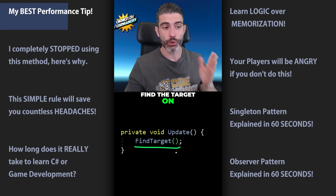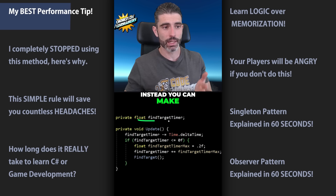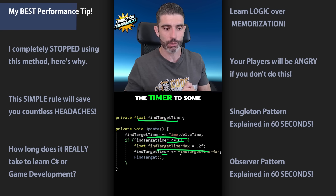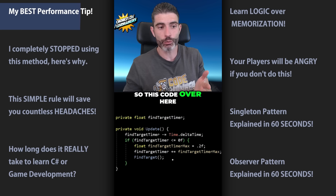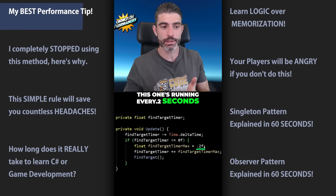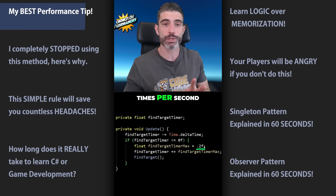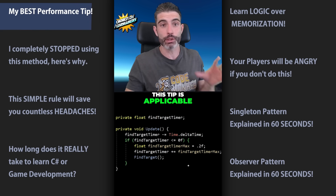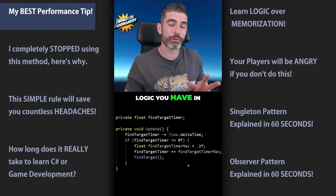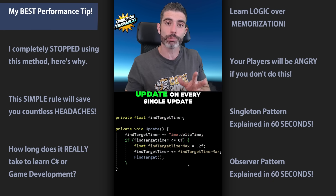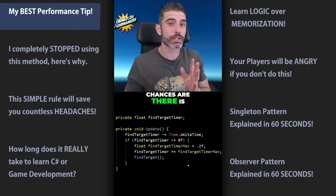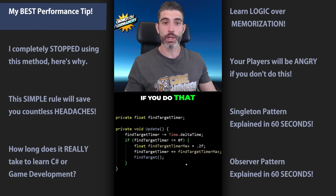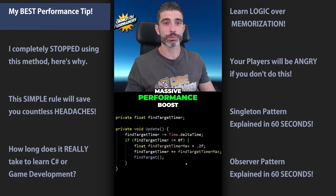One super easy way to boost performance: you don't have to find the target on every single update. You don't need the enemy to find targets 60 times every second. If you do it just two to five times per second, that's more than fast enough. Instead of running find-target on every update, make a simple float timer, count it down by Time.deltaTime, and once it's under zero, reset it to some timer max and then find the target. This code runs every 0.2 seconds — five times per second — which is more than responsive. This tip is applicable to literally any logic in your game.